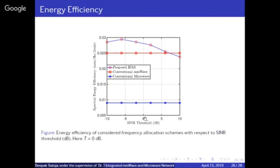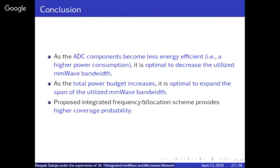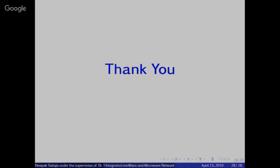In summary, across all three metrics — coverage quality, average rate, and energy efficiency — the proposed mixture of millimeter wave and microwave outperforms standalone approaches. Coverage quality is much higher, rate is in between, and energy efficiency is better than both. Therefore, using a mixture of millimeter wave and microwave networks is the recommended approach.